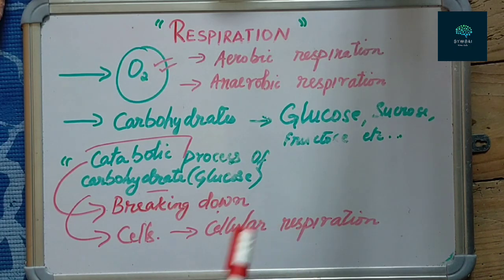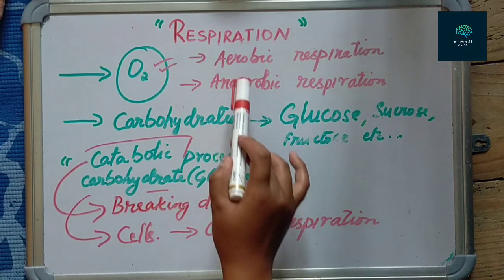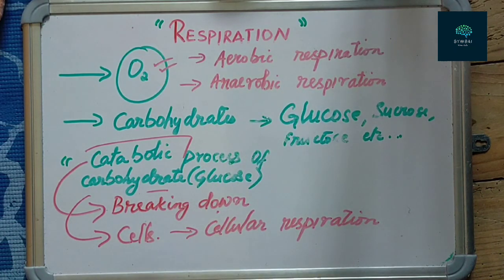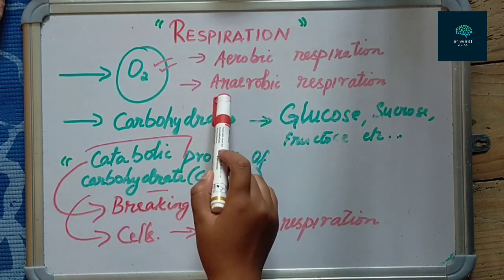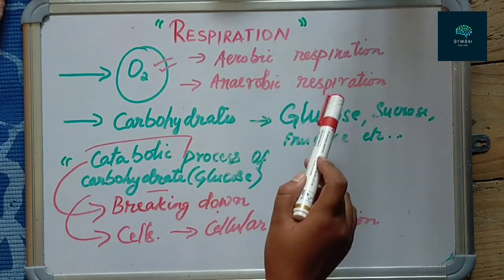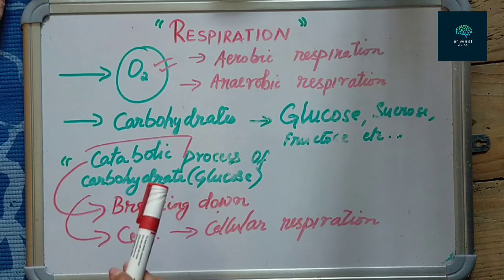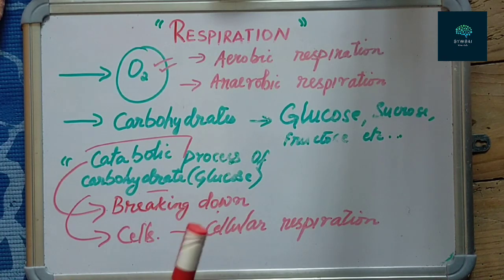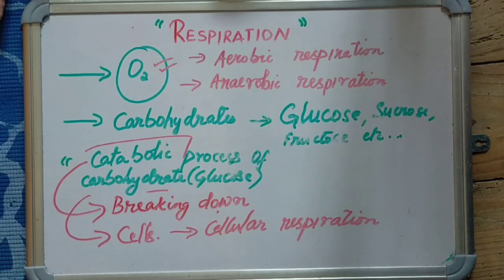With the presence of oxygen, it is called aerobic respiration. With the absence of oxygen, we call it anaerobic respiration. The breaking down of carbohydrate, mainly glucose, within the cells is called respiration.